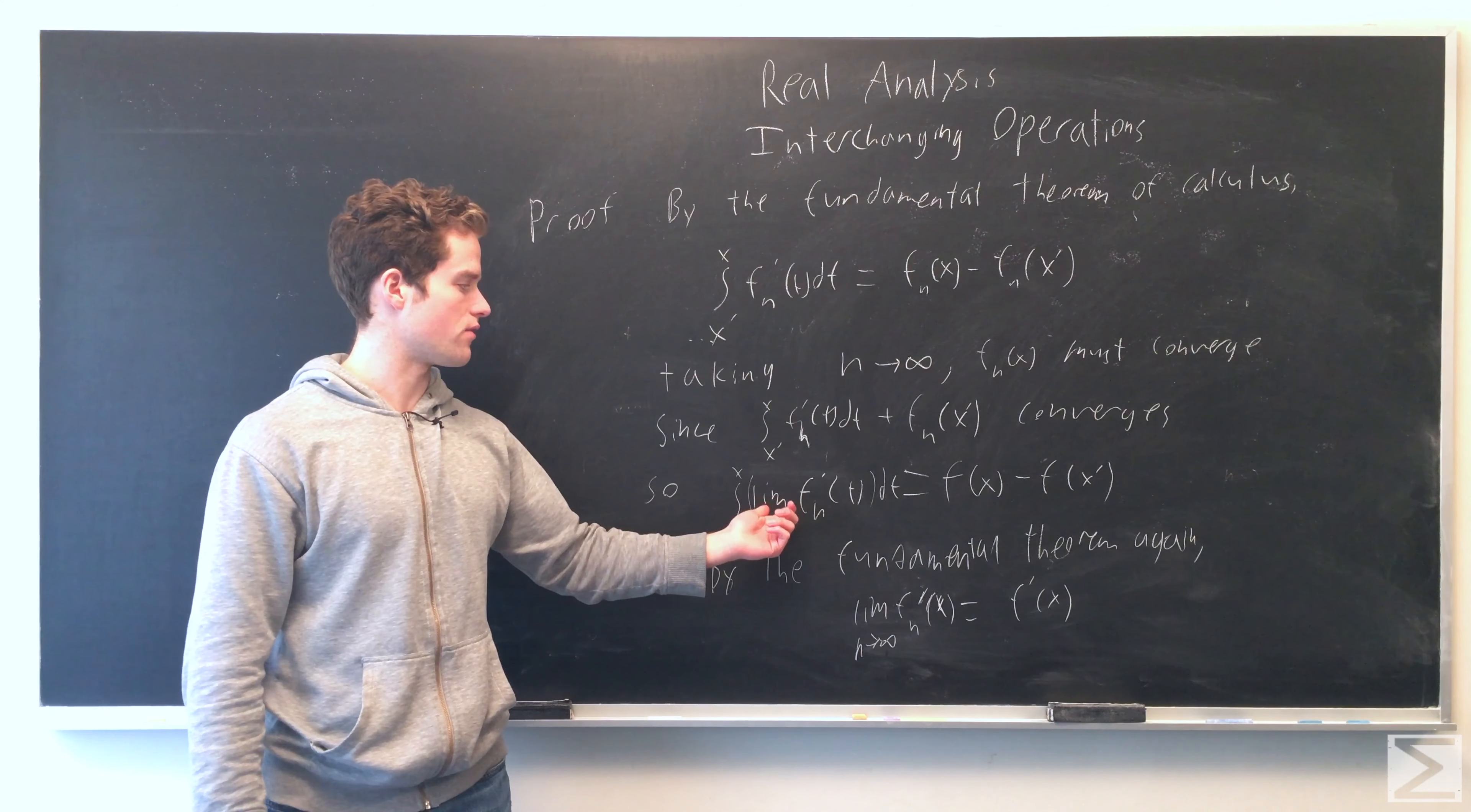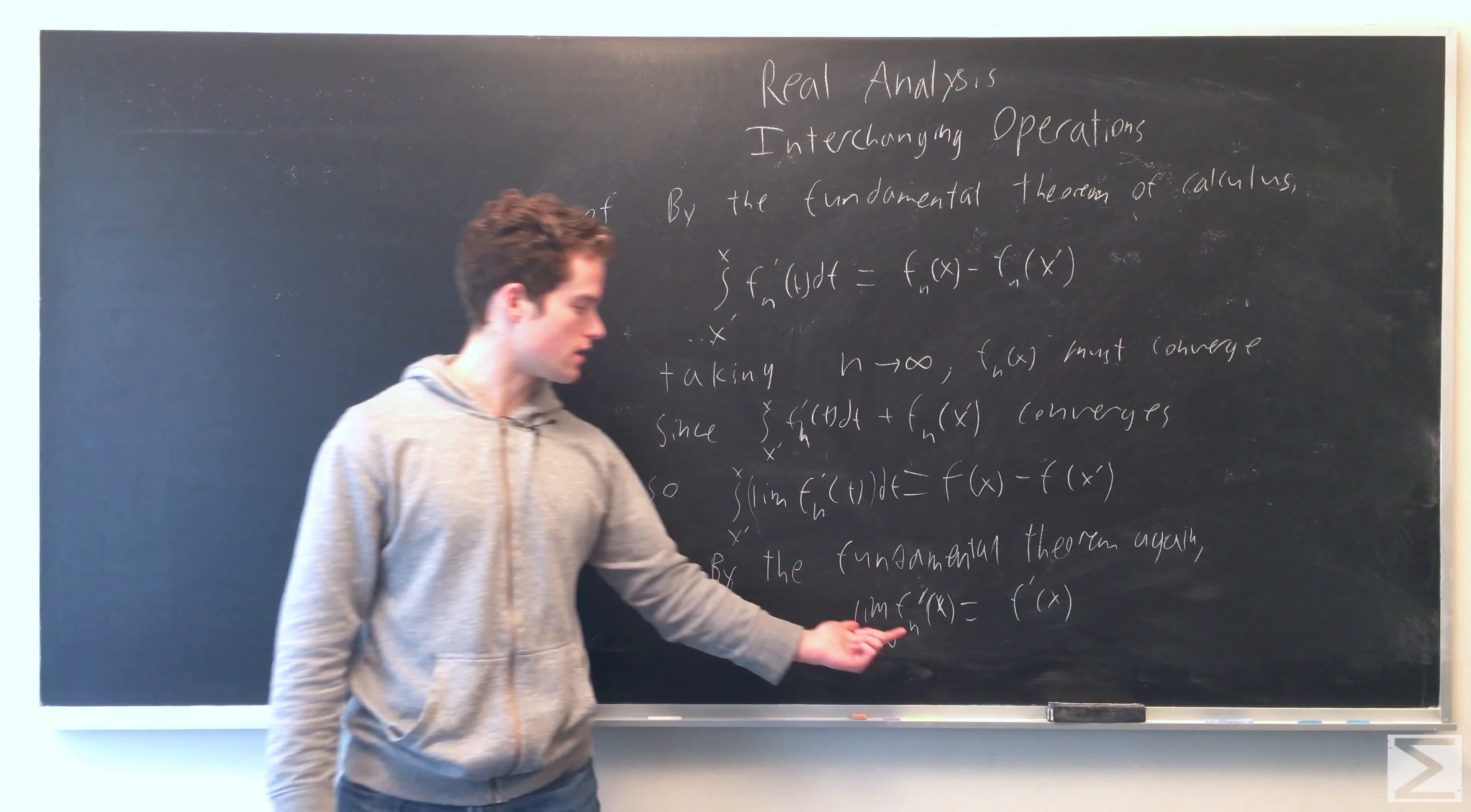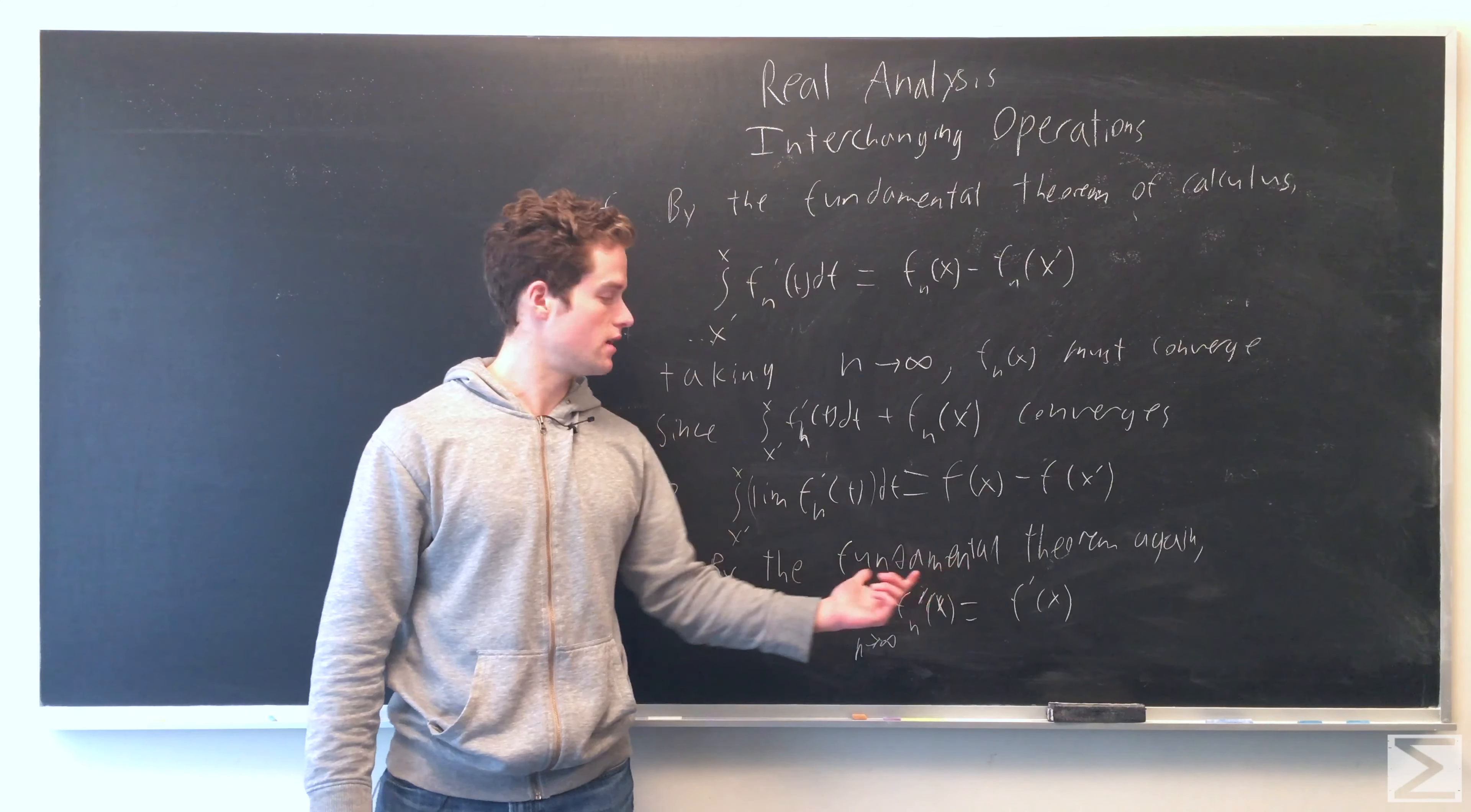prime of x—this thing is in fact the derivative of f(x). And so this expression, limit as n goes to infinity of f_n'(x) equals f'(x), is really our desired claim.